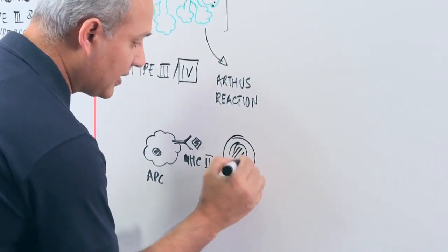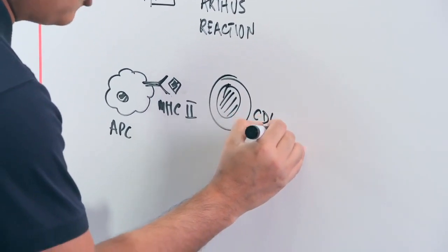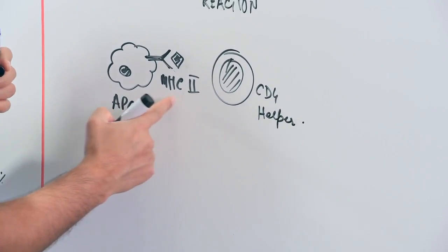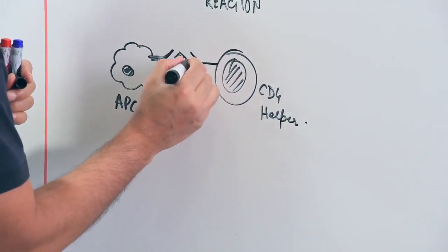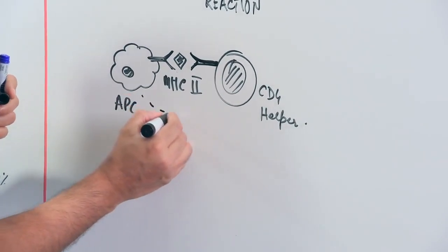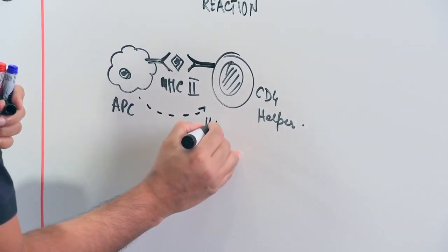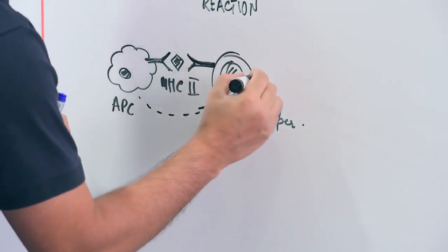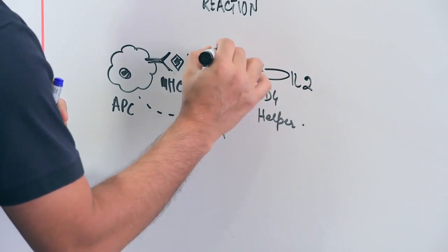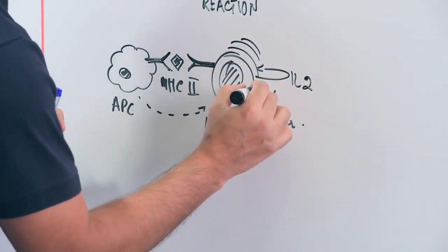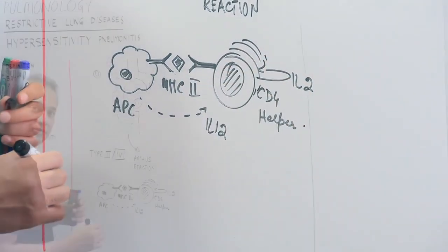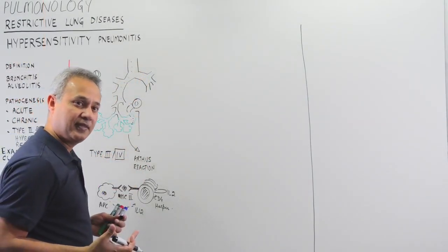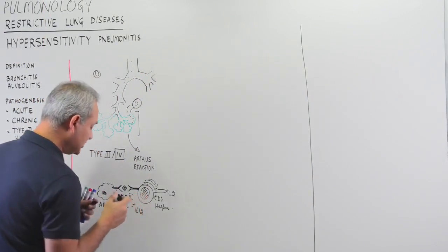So here is a T cell. Let's say this is a CD4 helper T cell presenting with the MHC2, presented with the MHC2. So let's say this is a T cell receptor. Then macrophage would release IL-12, which will make the T cell activated and T cell would release IL-2. That would cause the T cell to become proliferated. So there are going to be many, many T cells now. These T cells are going to run back to the area where the allergy is happening.